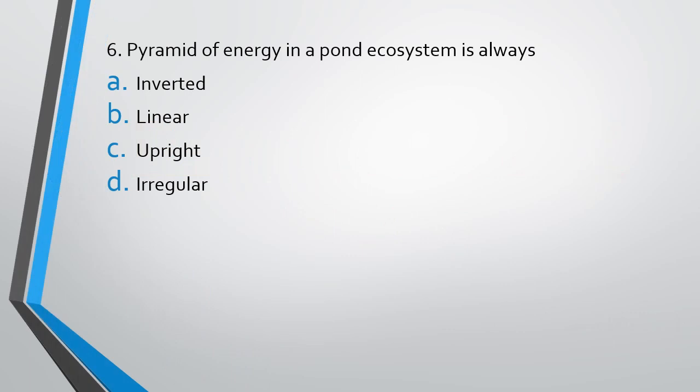Question 6. Pyramid of energy in a pond ecosystem is always: inverted, linear, upright, or irregular? The correct answer is option 3, upright. The pyramid of energy, irrespective of which ecosystem it is, is always upright.